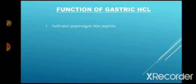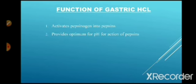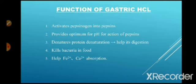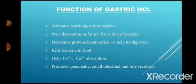Functions of gastric HCl: it activates pepsinogen into pepsin in its active form; it provides the optimum pH for action of pepsin; it denatures proteins; it kills bacteria in food; it helps with Fe2+ and Ca2+ absorption, meaning ferrous and calcium absorption; and it promotes pancreatic, small intestine and bile secretion.